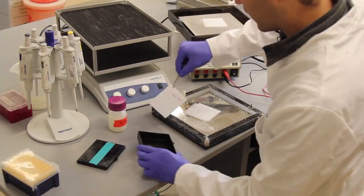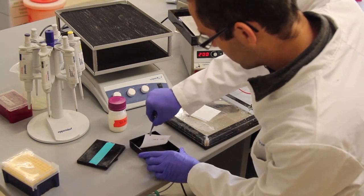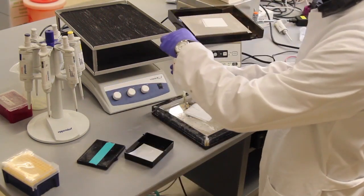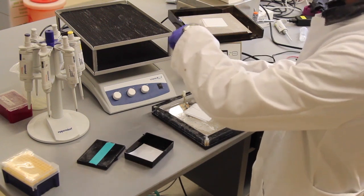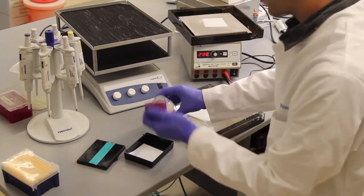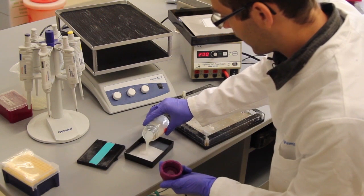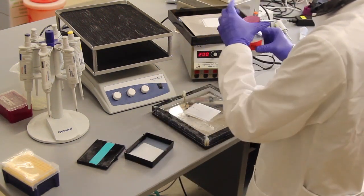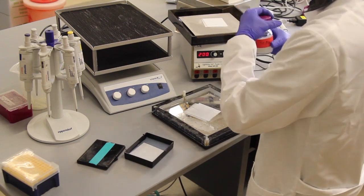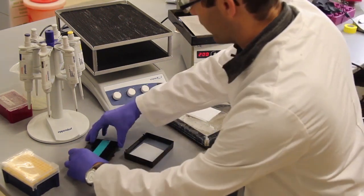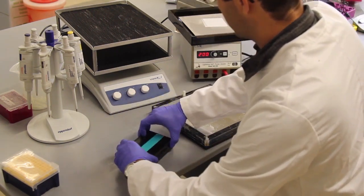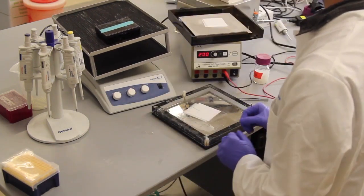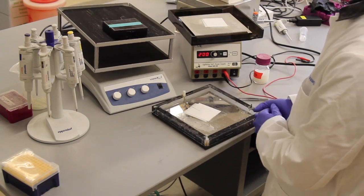The next step is for me to put this membrane into this box right here. And I'm going to add a 5% milk solution on top of it. And this milk solution contains some proteins, which will bind to any part of the membrane that does not yet have proteins attached to it. This will prevent non-specific binding from the antibodies later on. Close it up. I place it on the shaker, turn it on, and this now sits here for about one hour.